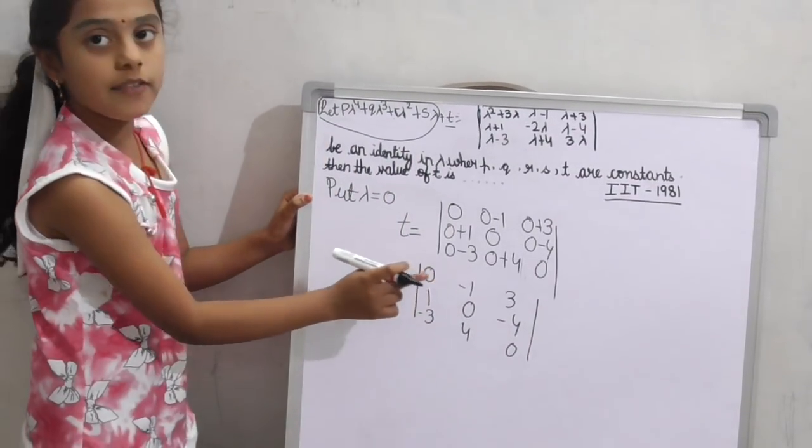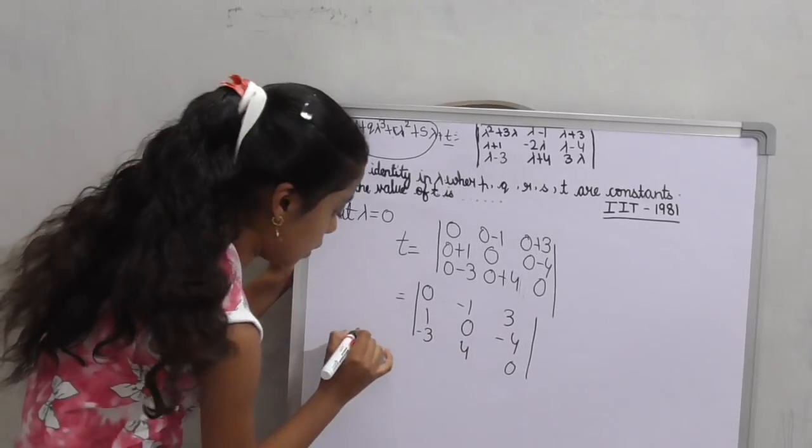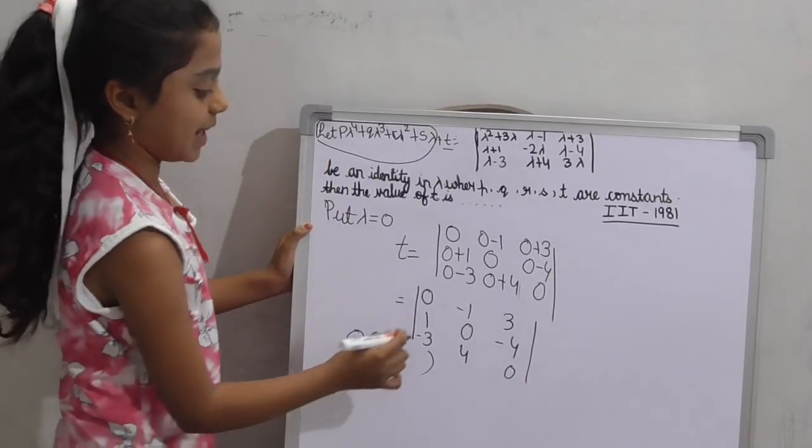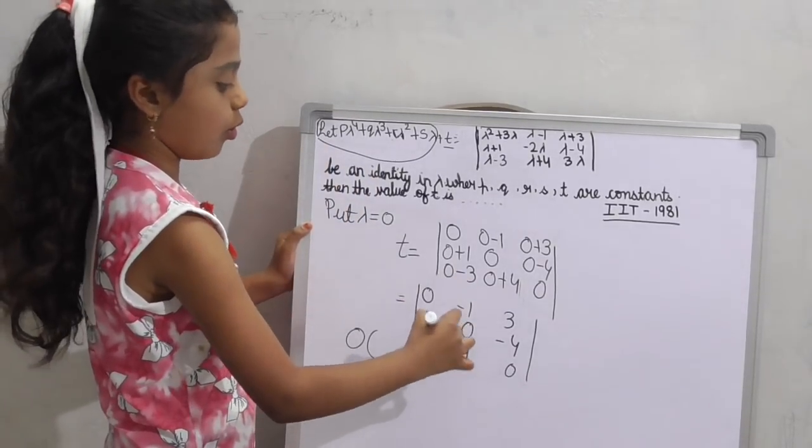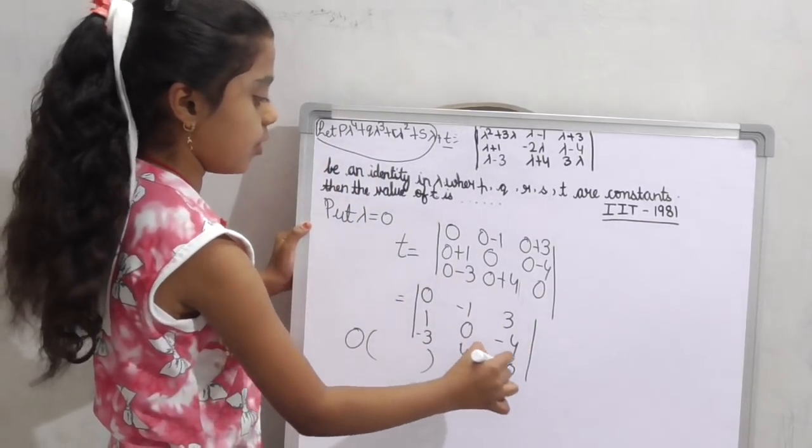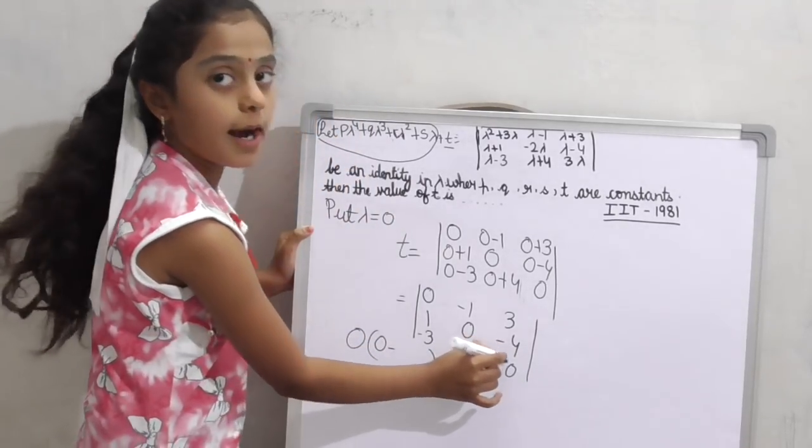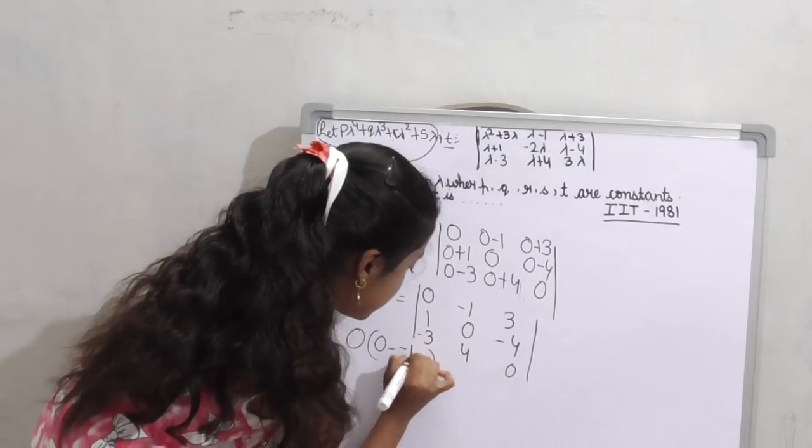First, take the first element, which is 0. Put a bracket for multiplication. Leave row 0 and column 0. 0 into 0, 0 minus 4 into minus 4, minus 16.